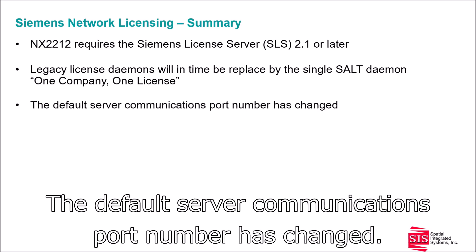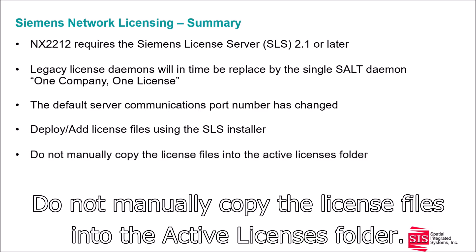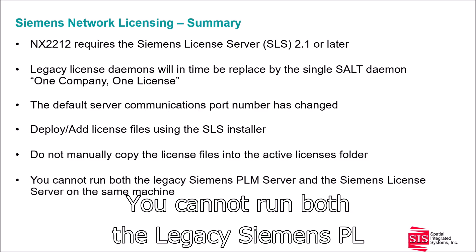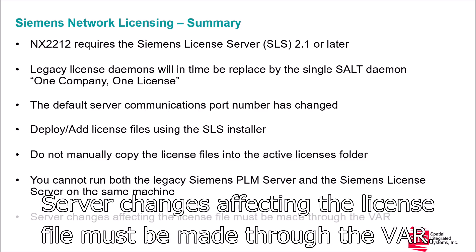The default server communications port number has changed. Add license files using the SLS installer — do not manually copy the license files into the Active Licenses folder. You cannot run both the legacy Siemens PLM server and the Siemens license server on the same machine. Server changes affecting the license file must be made through the VAR.